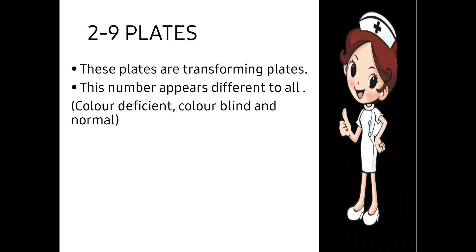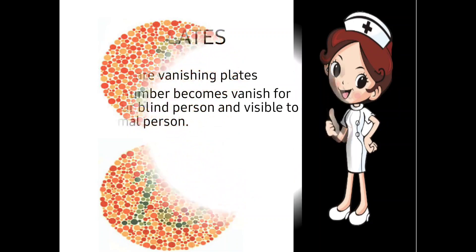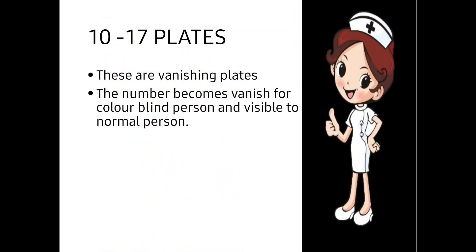Plates 2 to 9 are known as transforming plates. Different numbers are read by different persons — a color deficient person will read one number, a color blind person will read another number, and a color normal person will read a different number from the same plate. For example, 3 and 15 are the normal answers, and these normal answers are not given by the color blind or color deficient patient.